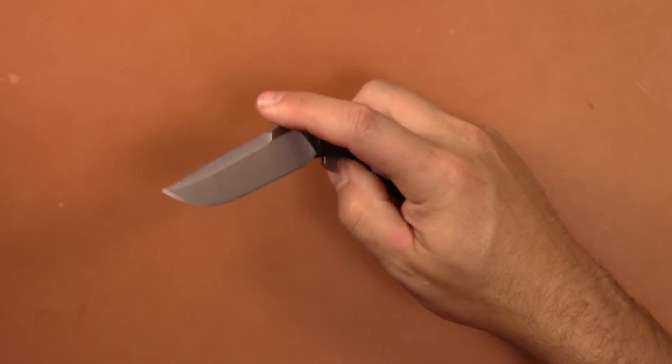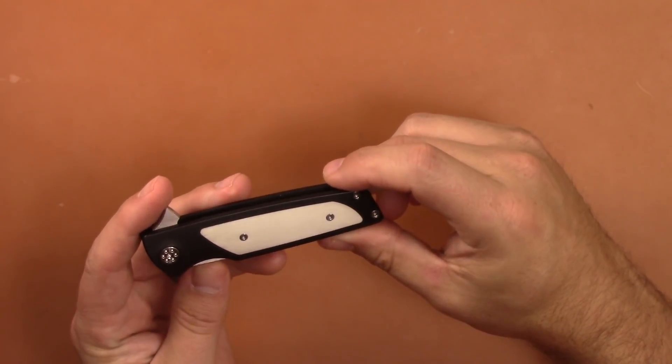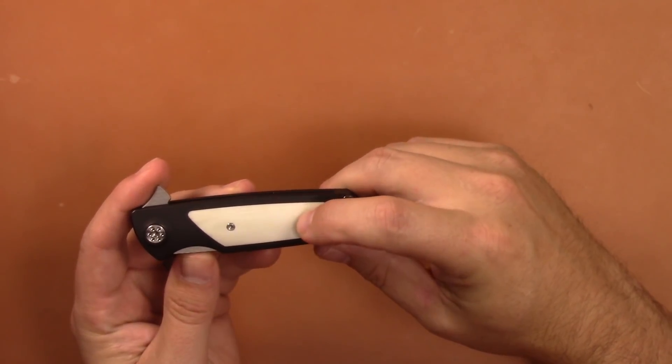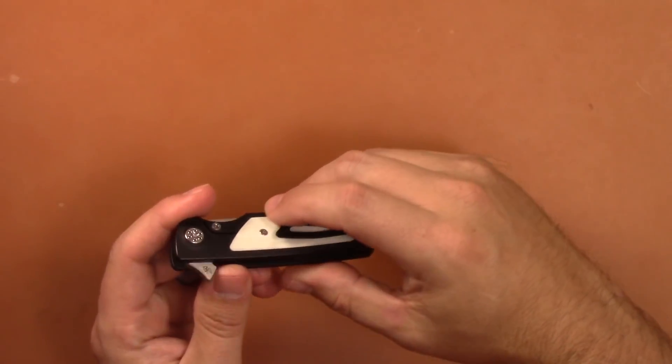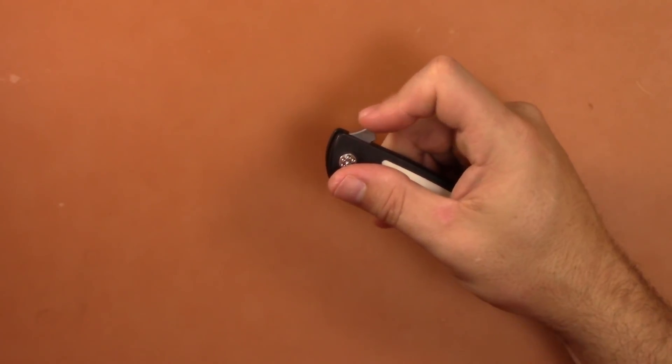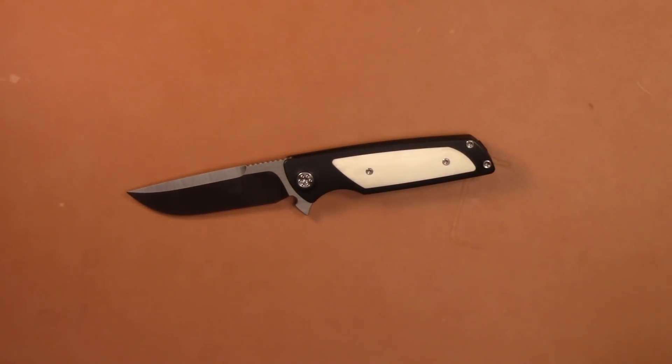Look at that black and white. I think it looks so good, a little tuxedo finish. The PVD is kind of like a stonewashed PVD coating, so that will not show a lot of wear which is great. I really like that white G10 that looks really good.